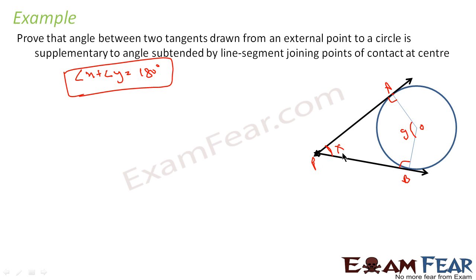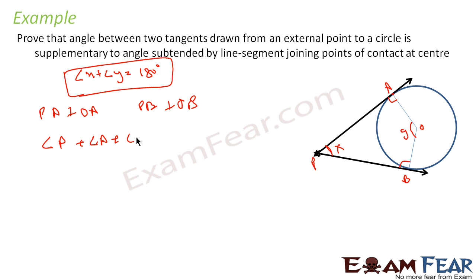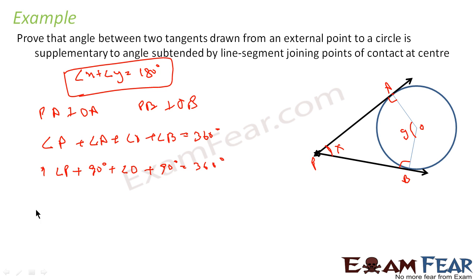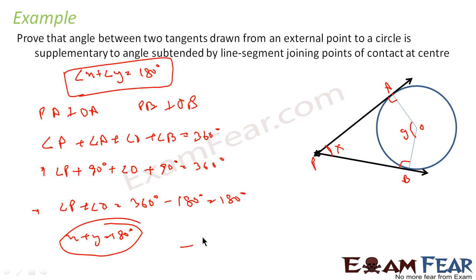Since PA and PB are tangents, they are perpendicular to OA and OB respectively, so angles OAP and OBP are each 90 degrees. In quadrilateral PAOB, the sum of all angles equals 360 degrees. Therefore, angle P plus 90 plus angle O plus 90 equals 360, which gives angle P plus angle O equals 180 degrees. That is, X plus Y equals 180 degrees, and hence the two angles are supplementary.